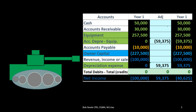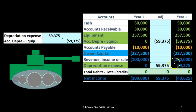If we record the depreciation for year one, we would debit depreciation expense, allocating the expense for that year. Of the cost of $257,500, we believe we've used up $59,375 of it, thereby decreasing net income by the amount consumed — in accordance with the matching principle. We then record a contra asset with a credit balance in accumulated depreciation of $59,375, the difference being the book value.